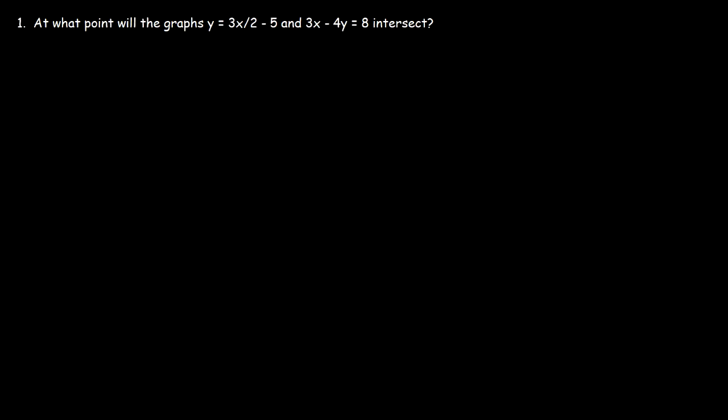So let's say if you're given two graphs, two linear equations, how can you go about finding the point of intersection? What do you think we need to do?